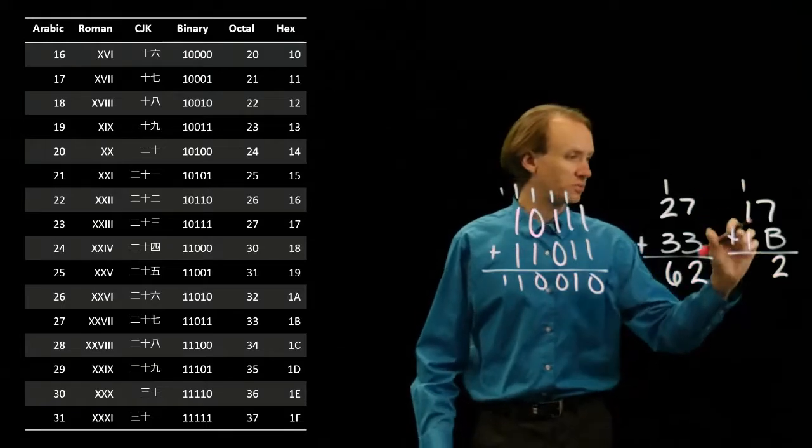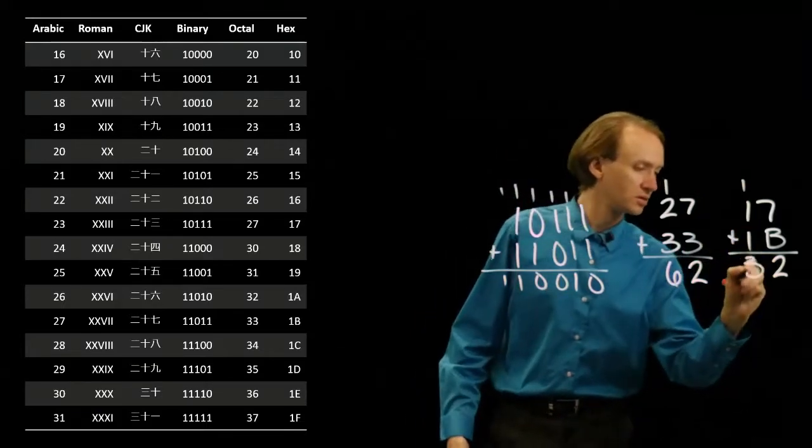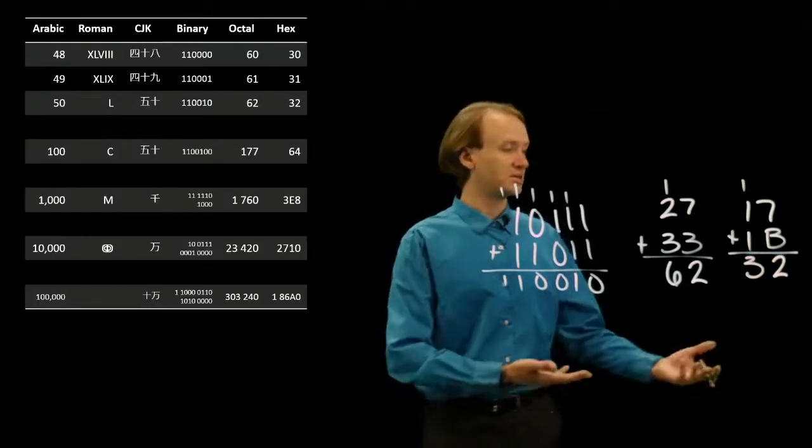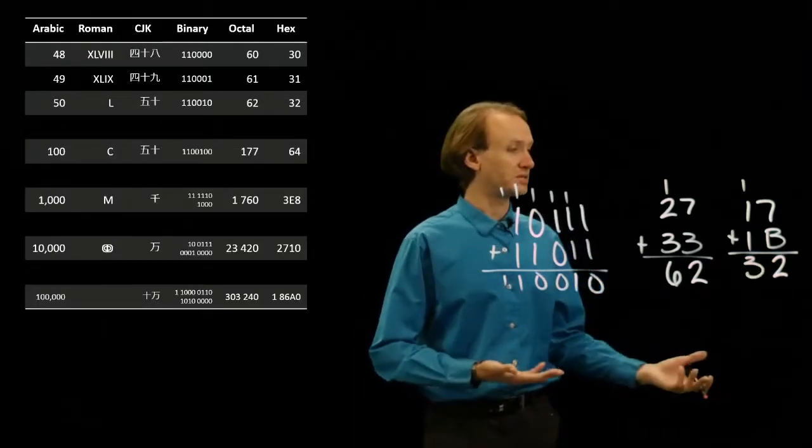And then I've got 1 plus 1 plus 1 is 3. I get 32. And if I scroll down, yes, I see 32 is my hexadecimal number.